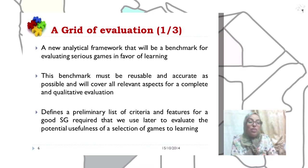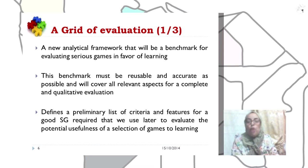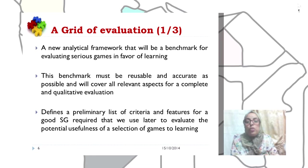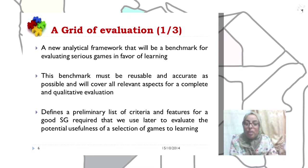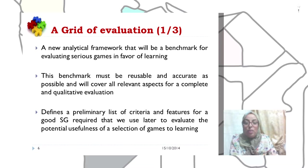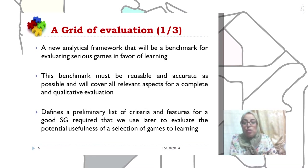To clearly identify the criteria of evaluation of serious games for the benefit of education, we have proposed a grid of evaluation. The grid is a new analytical framework that will be a benchmark for evaluating serious games in favor of learning. This benchmark must be as accurate as possible and will cover all relevant aspects for a complete and qualitative evaluation. It defines a preliminary list of criteria and features for a good serious game, which we use to evaluate the potential usefulness of a selection of games for learning.